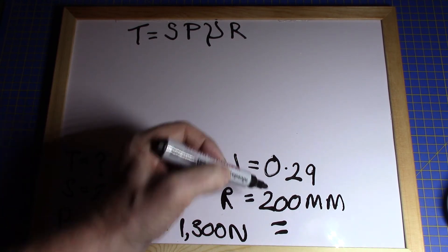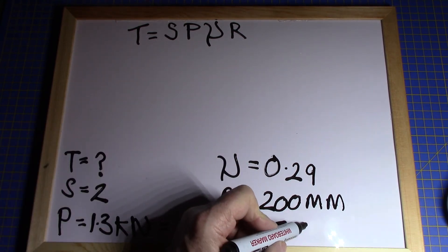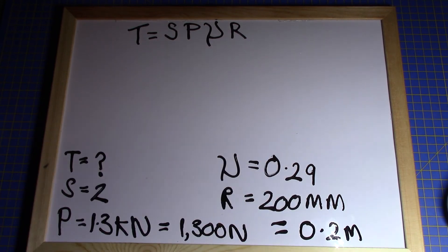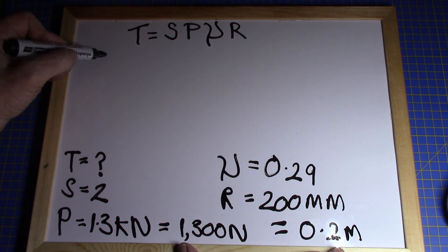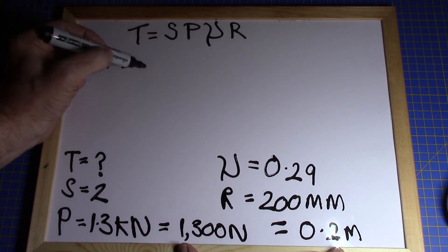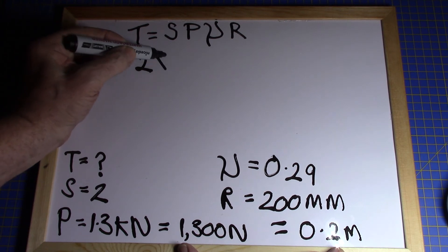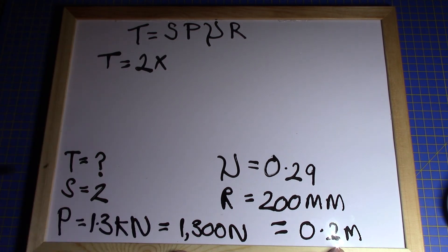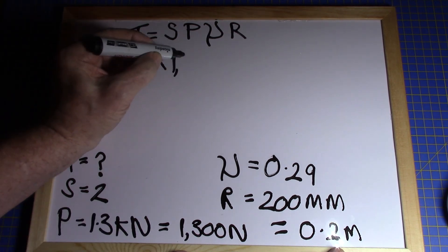Now it's just a matter of firing all those figures into the equation and letting our calculator worry about it. Torque transmitted equals S which is two, multiplied by P which is 1300. Remember we can't use kilonewtons, we have to use newtons, so 1300.